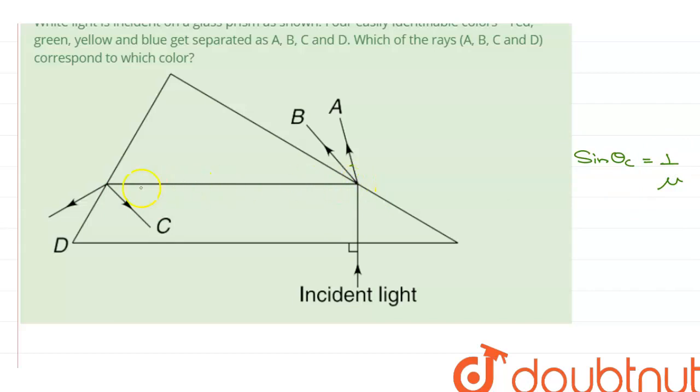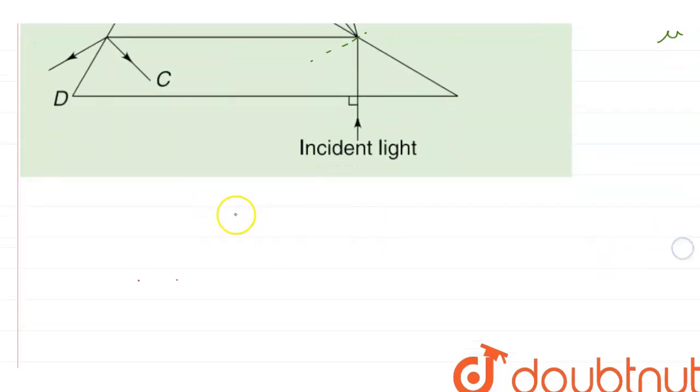So, if these two rays, D and C, are getting reflected at a smaller incident angle than A and B, that means that the refractive index of D and C is greater than the refractive index of A and B because sin theta C is inversely proportional to mu. So, mu of C, mu of D is greater than mu of A, mu of B.